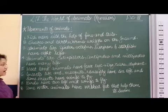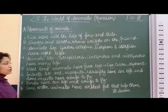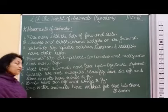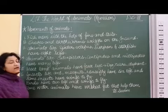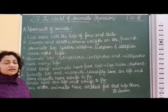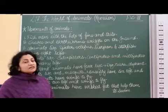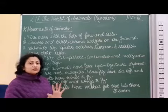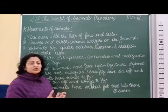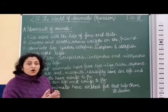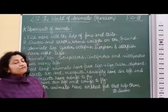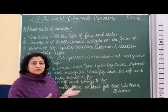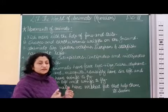Insects like ants, mosquitoes, and house flies have six legs and some insects also have wings to fly. These insects can go from one place to another with the help of their legs, and some insects have wings so they can go from one place to another that way too.